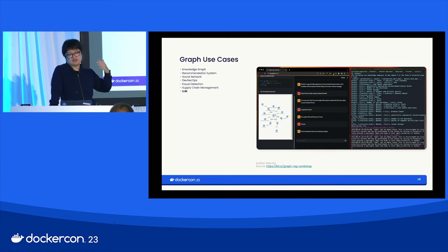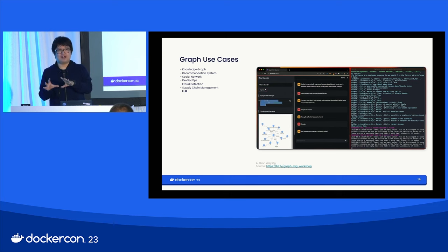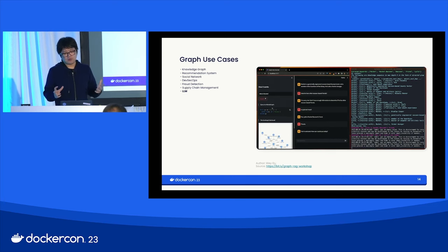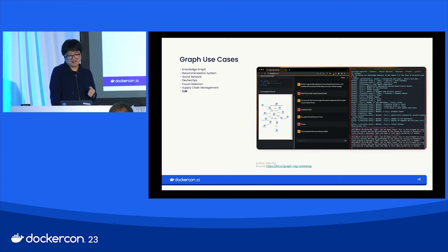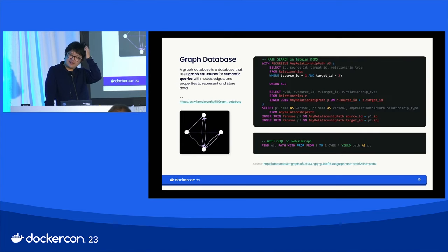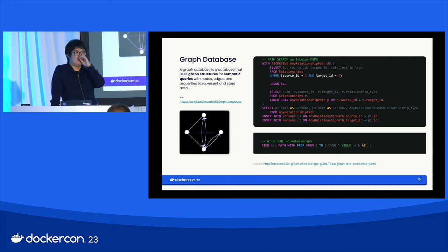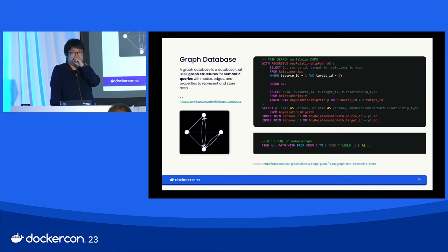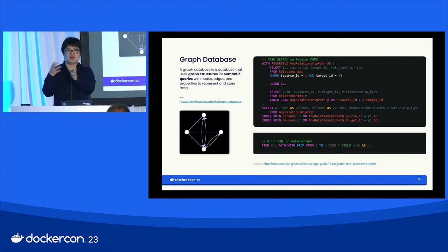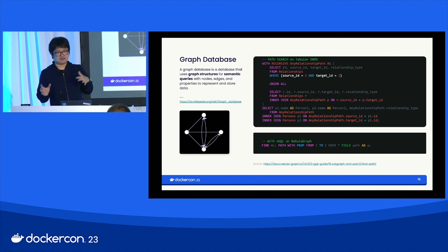One final use case is how graph can help when setting up language-model-based applications — I'll dive into details on that shortly. First, a quick background on graph databases: deciding whether to bring yet another database into your system can be tricky. One key reason is that a graph database enables queries on graph-structured data using graph semantics — for example, finding the path between two nodes to reason why a recommendation was made.